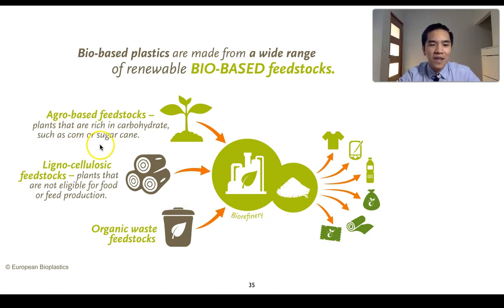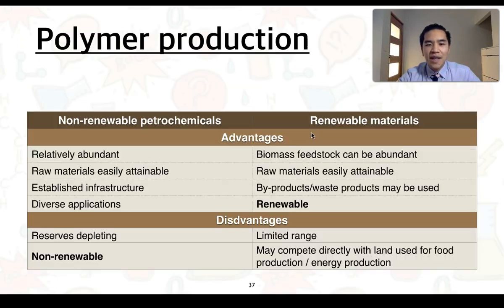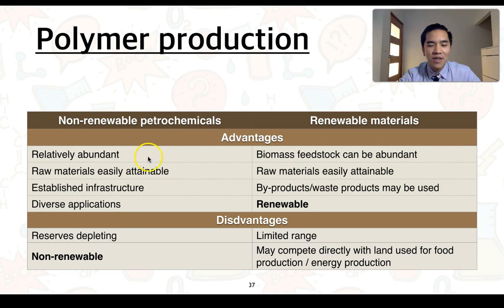These could be agro-based feedstocks, lignocellulosic feedstocks, as well as organic waste feedstocks, which can be refined to produce a range of products. Biopolymers, or bioplastics, can be used to make a wide range of different materials in our everyday life. Turning to the advantages and disadvantages: for petrochemicals, the advantages are that they're relatively abundant, the raw materials are generally easily obtainable, there is established infrastructure in mining and processing, and there are many diverse applications.